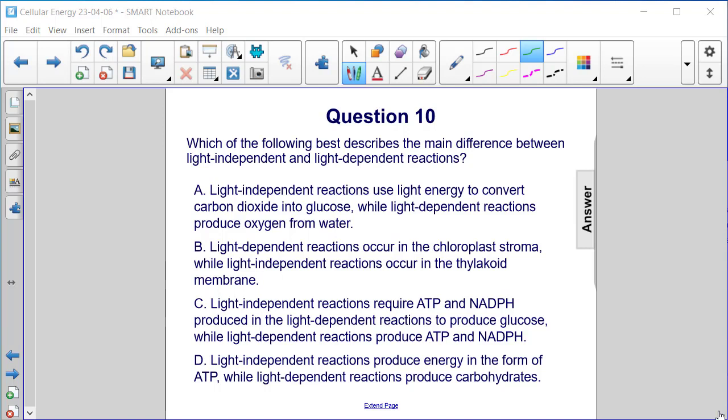D. Light-independent reactions produce energy in the form of ATP, while light-dependent reactions produce carbohydrates.